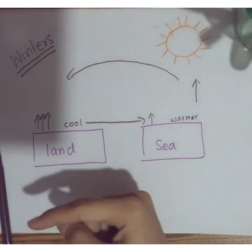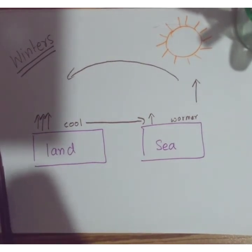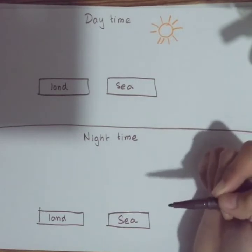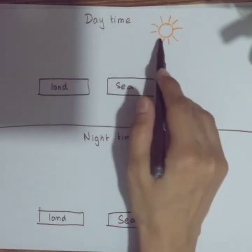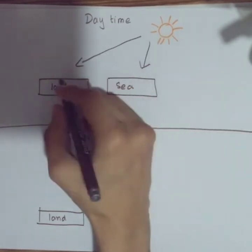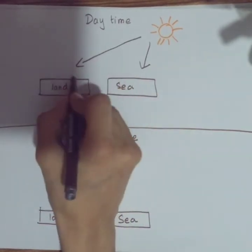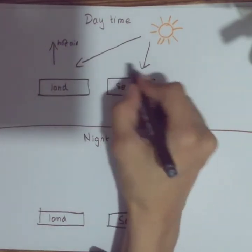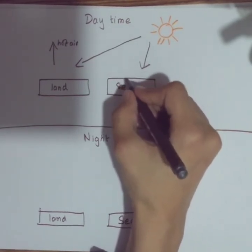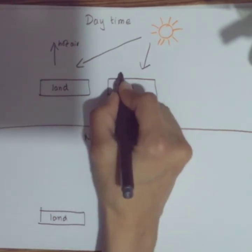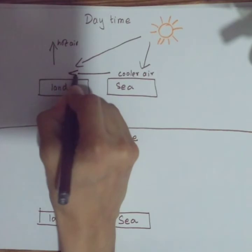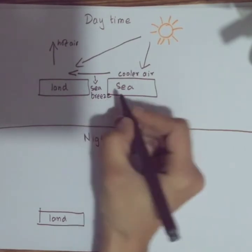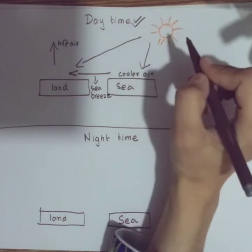We also need to discuss land breezes and sea breezes, which are active in coastal areas. During the daytime, the Sun heats both surfaces. The land absorbs heat faster, so the air over land becomes hot, rises up. The air over the sea is cool and dense, staying near the surface. This cooler air moves towards the land — because it's moving from the sea towards the land, we call it the sea breeze. Sea breezes are active during the daytime.